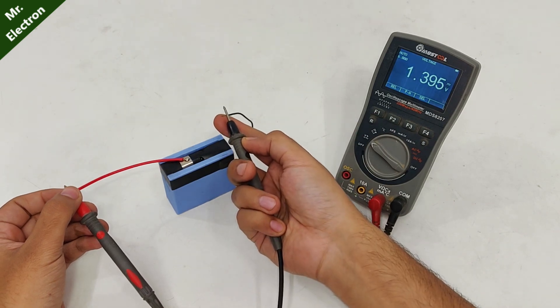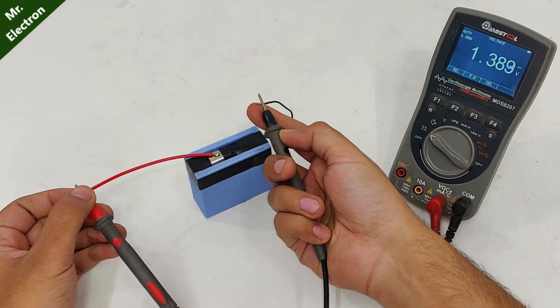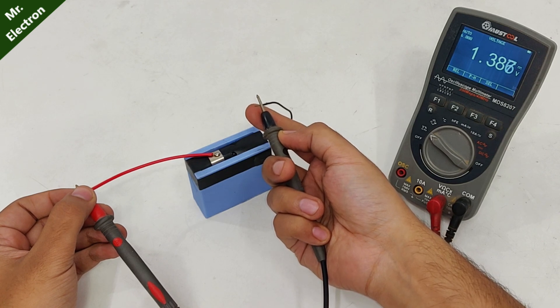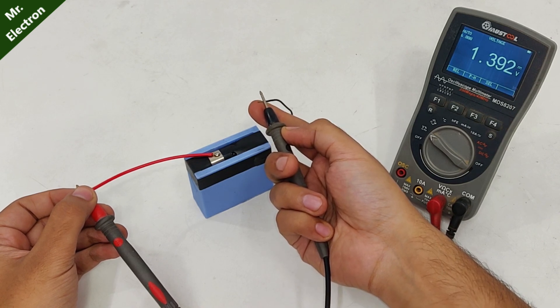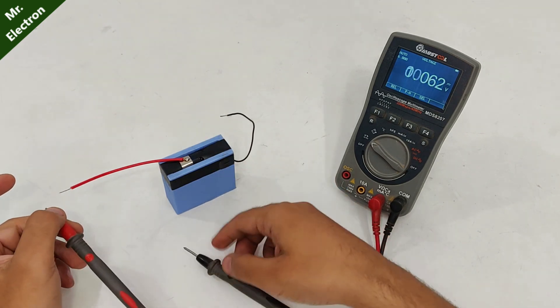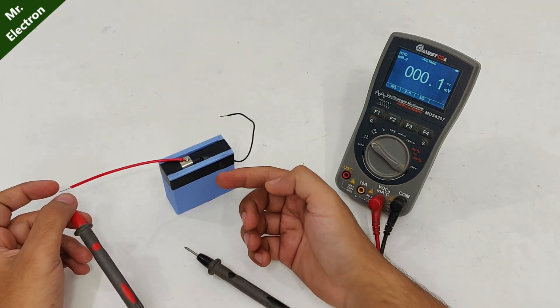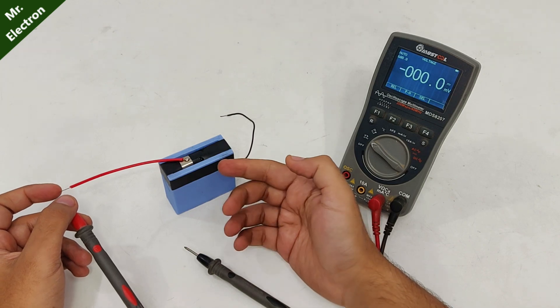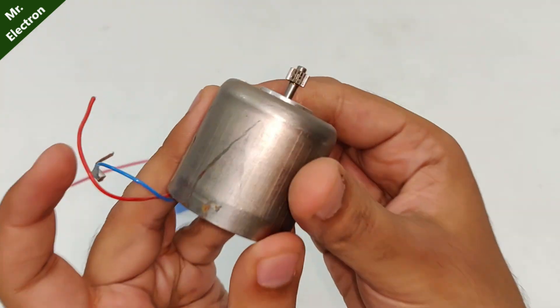And here as you can see that it is generating 1.4 volts, almost 1.4 volts, and it is increasing as the potassium hydroxide solution is getting more and more in contact with the aluminum plate. Next I have this DC motor, it's quite big for this single cell, and I'm going to try this.